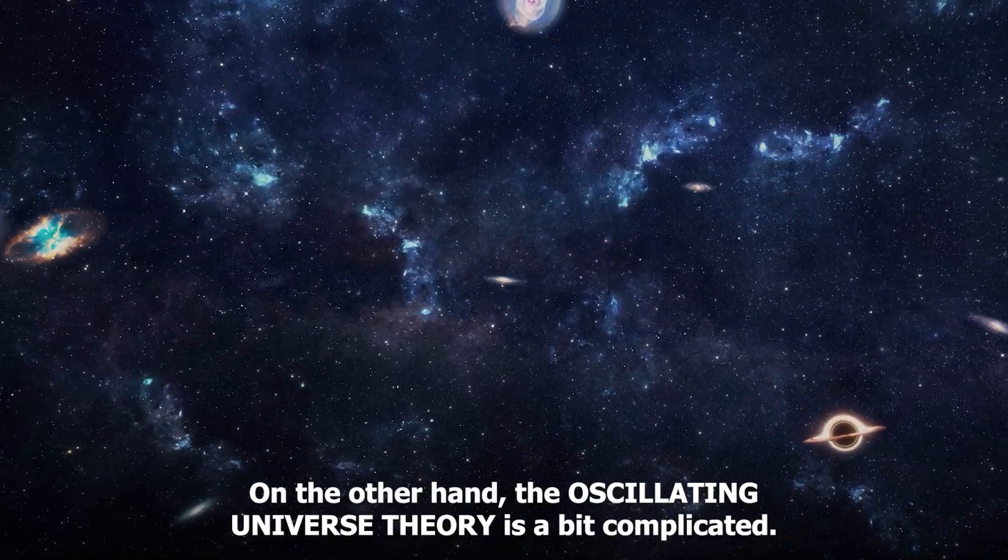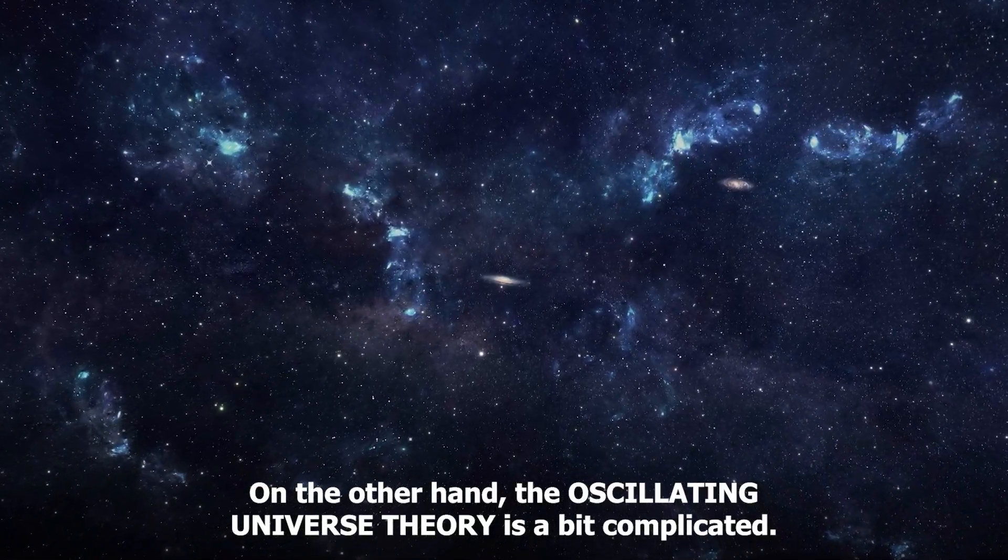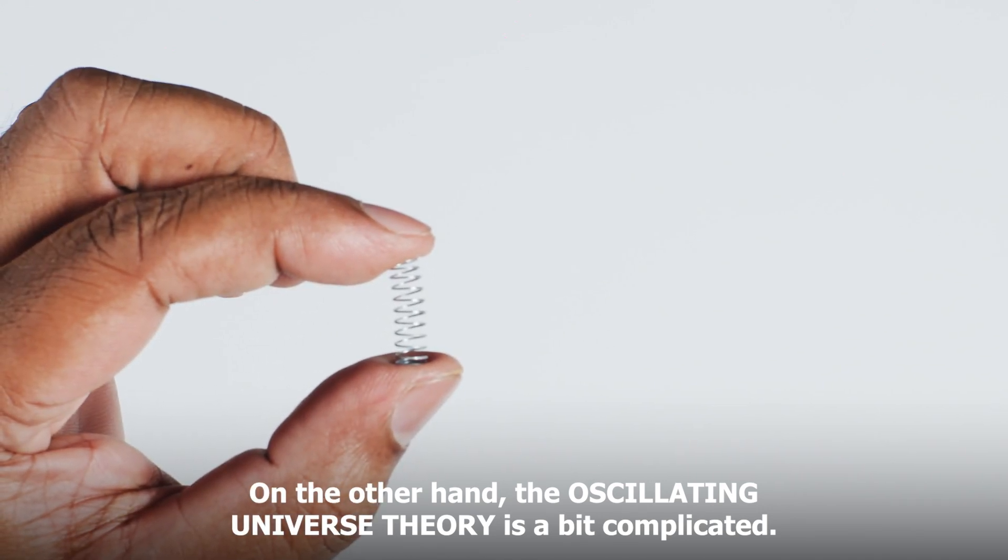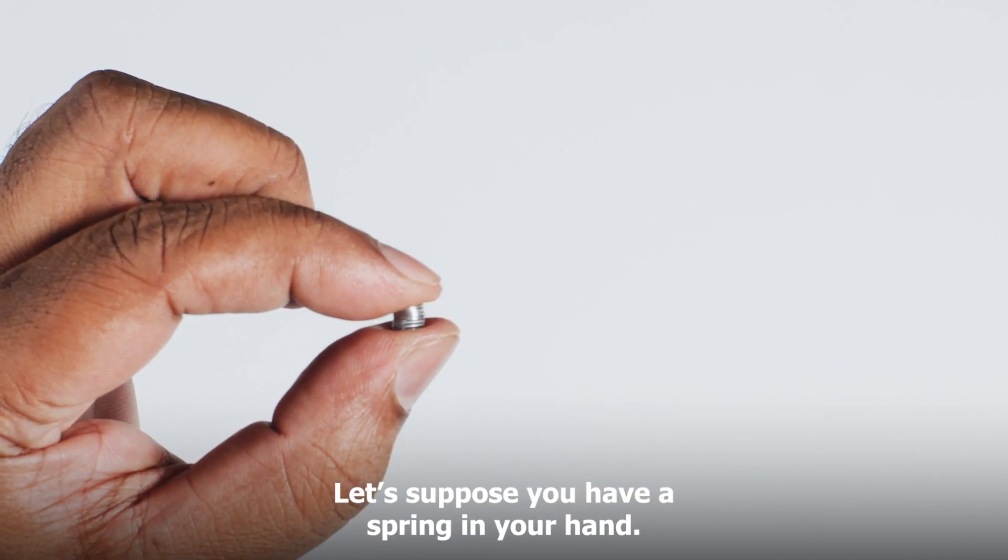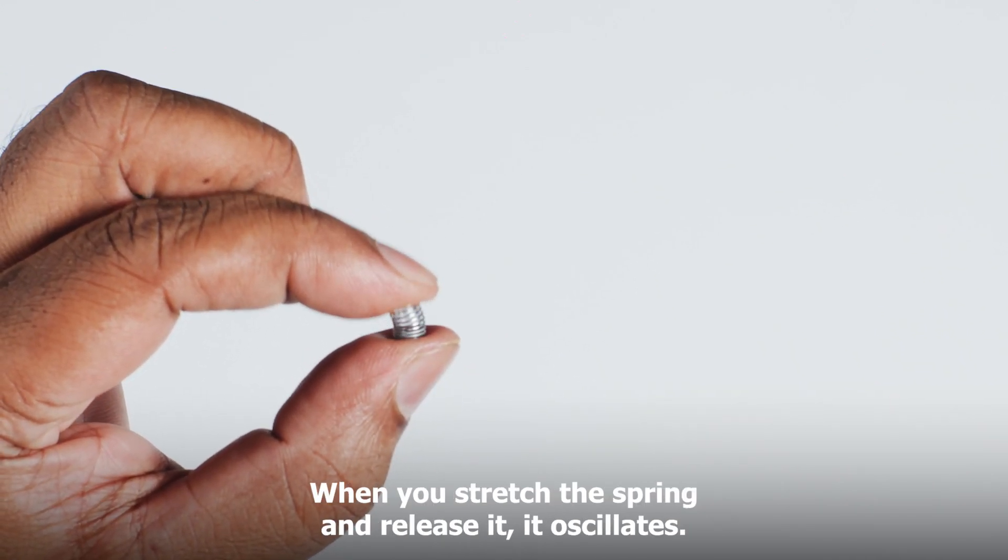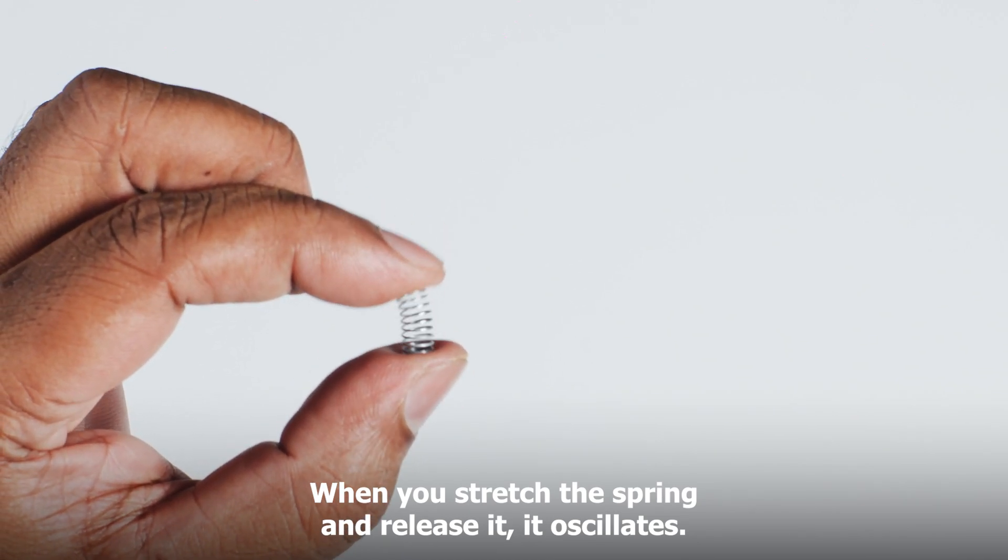On the other hand, the Oscillating Universe Theory is a bit complicated. Let's suppose you have a spring in your hand. When you stretch the spring and release it, it oscillates. According to this theory, our Universe is going through an endless series of stretches and contractions.